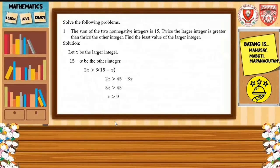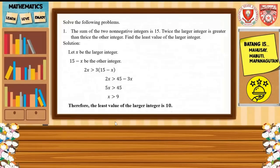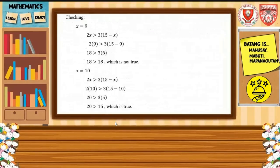So 2x is greater than 45 minus 3x, and 5x is greater than 45. Therefore, x is greater than 9, meaning the least value of the larger integer is 10. For checking: if x equals 9, the inequality is not true. Therefore, x must be 10, which makes the linear inequality true. The value of x is equal to 10.